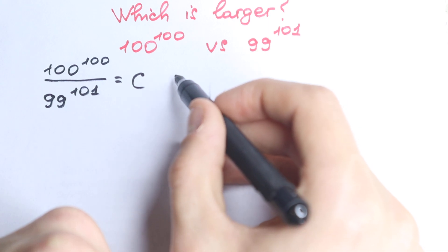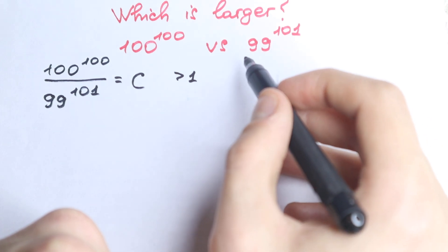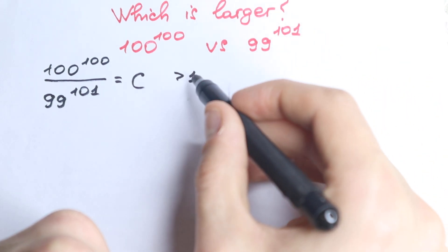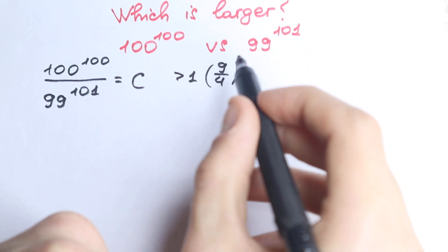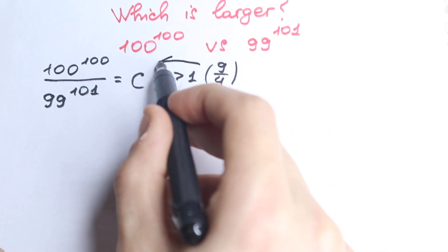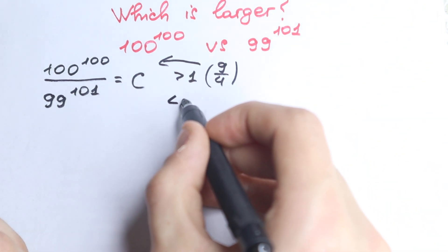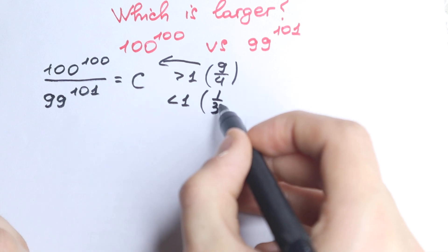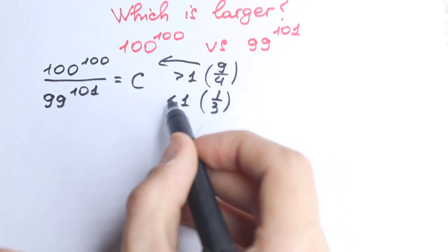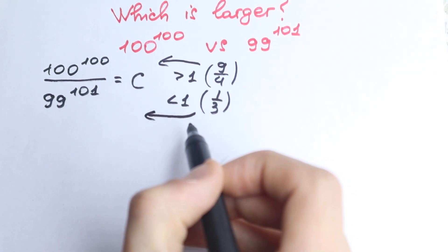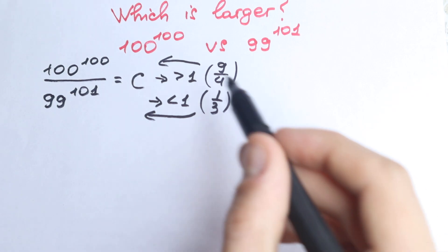Take a look closely: if this constant is greater than 1, then we can easily say that our numerator will be greater — because if the constant is greater than 1, this fraction looks like, for example, 9 over 4. And if this fraction is greater than 1, then our numerator will be greater. The second case: if our constant is less than 1, for example a fraction like 1 over 3 or 1 over 4, then our denominator will be greater. So two cases — both really important — because we don't know exactly the value of this division.